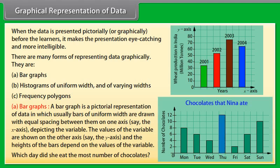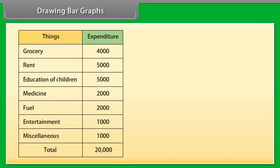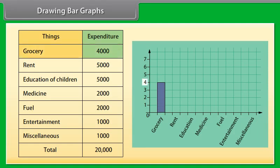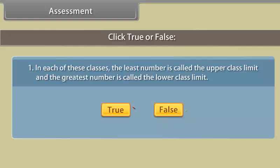Drawing bar graphs: This table shows the data of the expenditure of a family with a monthly income of 20,000. To make the bar graph we use things on the horizontal axis and expenditure on the vertical axis. Here one means 1000, two means 2000. To represent grocery we make a bar of unit 4. Similarly other things are represented leaving a gap of one unit in between two consecutive bars.